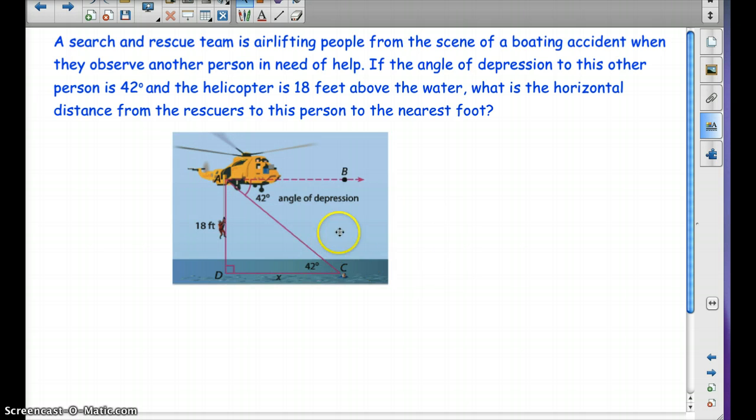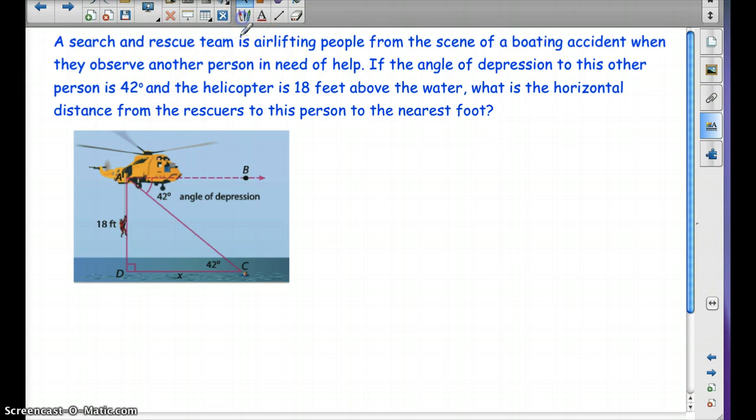And there's my wonderful drawing again. Man, I am such a good artist. I tell you what. Okay, so here's the angle of depression, 42 degrees from this horizontal line, because this is from the helicopter. Okay, 18 feet up and down. And then, we want to know how far it is, the horizontal distance from the rescuers to this new person that they found. Okay, now why can I say that this angle is 42 degrees? Well, these two lines are parallel. These two lines are parallel, so that's why we have alternate interior angles. So, I can say those two angles are congruent.